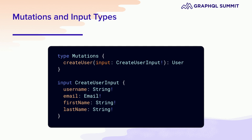I want to talk a bit about mutations. A lot of this applies the same for queries and mutations. One helpful pattern is having a single input, even if you've got multiple fields that you need to add. In this case, we're creating a user with a create user mutation. We've got a single required input, but with four fields. If we can require all of these, we're still only adding a single way to call this mutation.